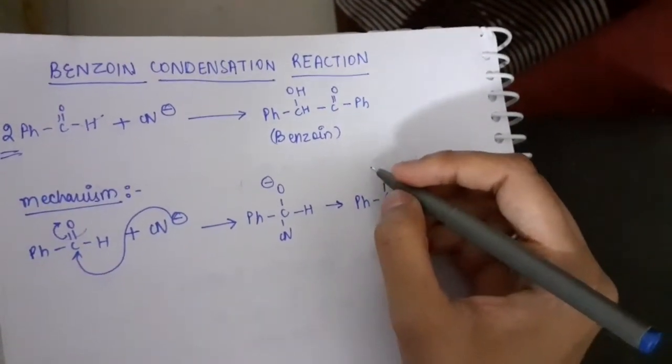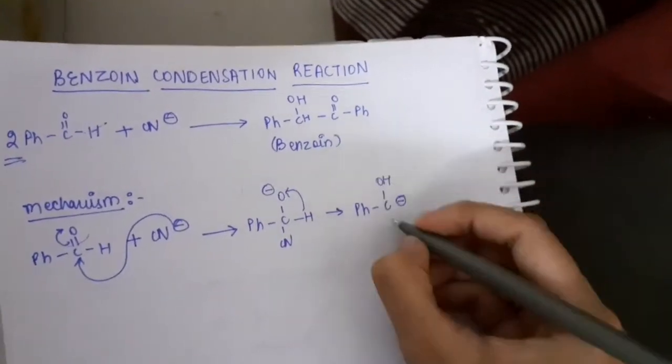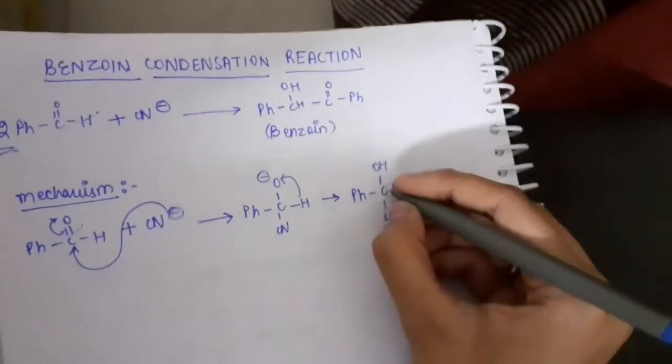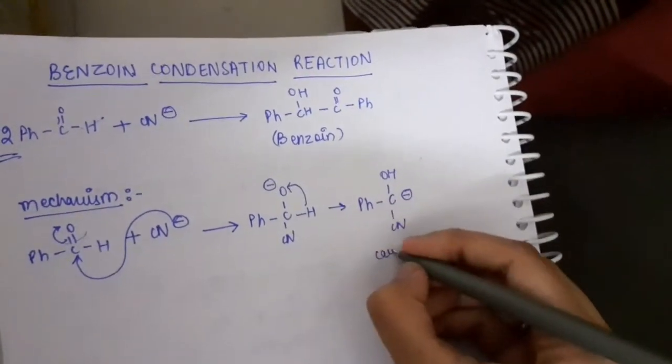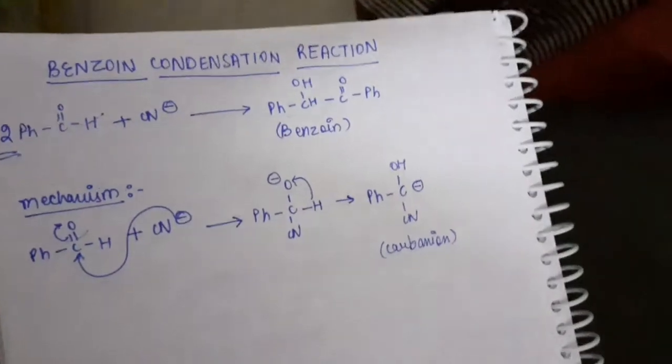What actually happens is that this H transfers here and here we have CN with a negative charge, and this carbon is now having a negative charge. We call this kind of carbons as carbanion.